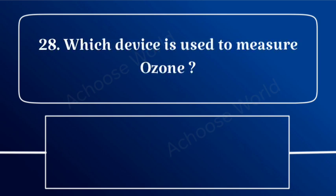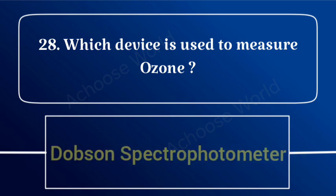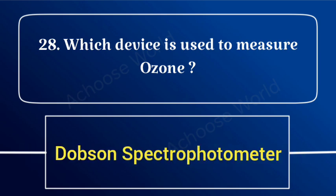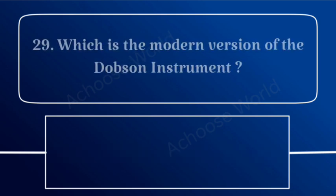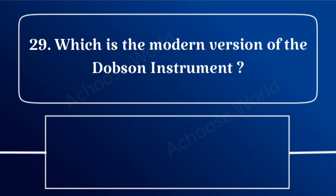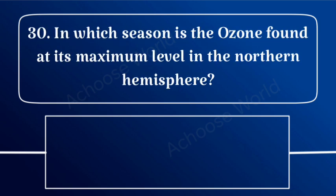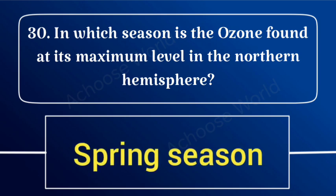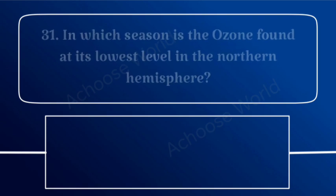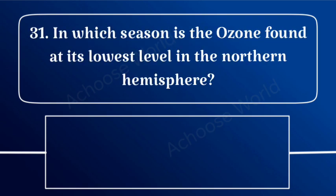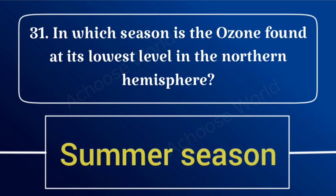Which device is used to measure ozone? Dobson spectrophotometer. Which is the modern version of the Dobson instrument? Brewer ozone spectrophotometer. In which season is ozone at its maximum level in the northern hemisphere? Spring season. At its lowest level? Summer season.